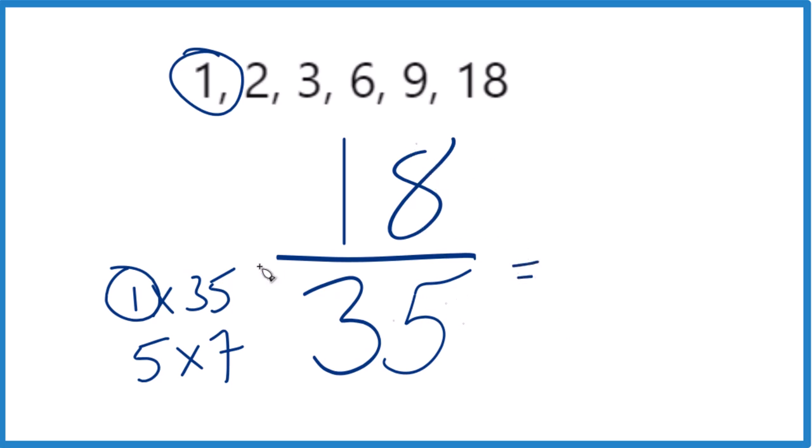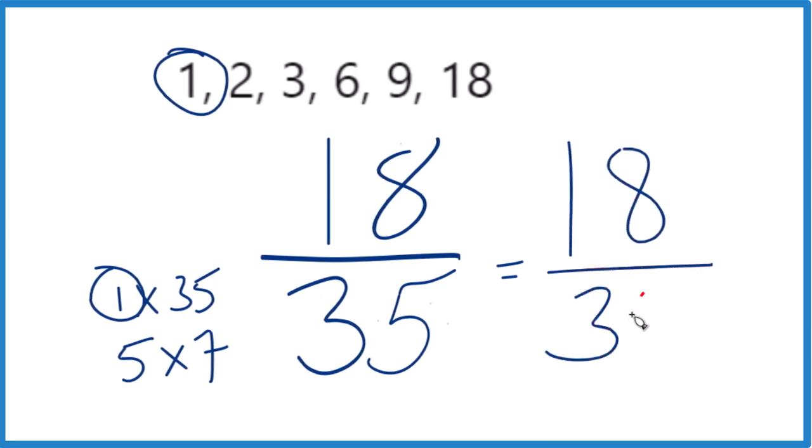So we divide 18 by 1, we get 18. We divide 35 by 1, we get 35. That's right back where we started. That means 18 35ths, that's already simplified.